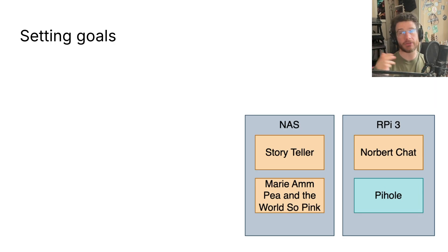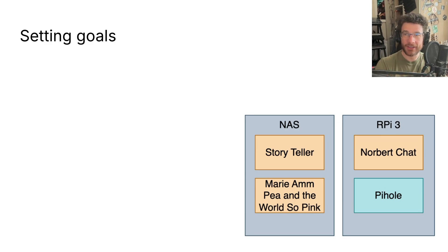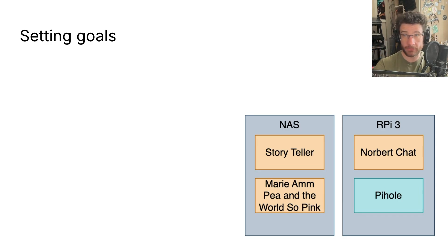Norbert Chat is hand-coded, works over WebSocket, and can do voice chat. And then there's Pi Hole, which is a DNS firewall — not one I've written myself, just an application. I thought I could stick all that on Kubernetes, tidy it all up, get some redundancy and resilience.